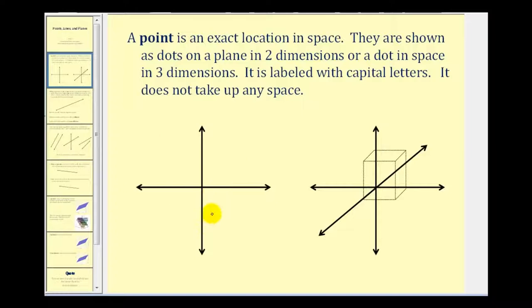So if we were to plot points in two dimensions, we often plot them on the coordinate plane as we see here. So if we had four points, we could label them capital A, capital B, capital C, and capital D in no specific order.